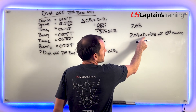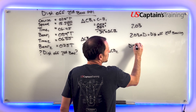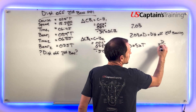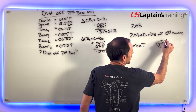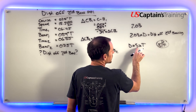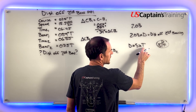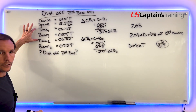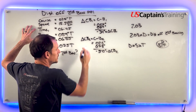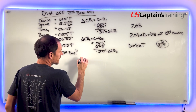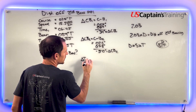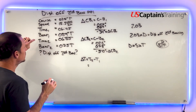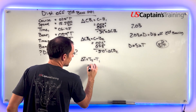To get distance we use: distance equals speed times time. We have a speed, and we can find the time because we're given two times. So we'll find the change in time: delta-T equals time two minus time one. Time two is 0655.